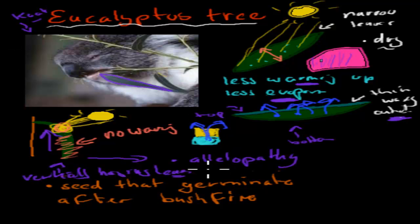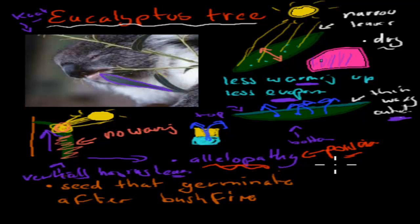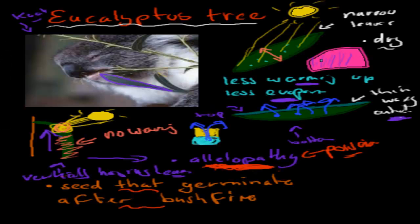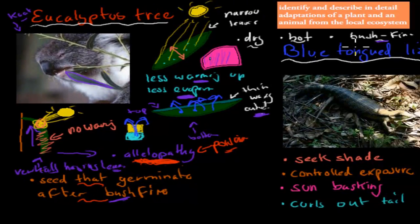Another adaptation is allelopathy — a poison that some eucalyptus trees produce that kills off competition around them. This is an advantage and a physiological adaptation: by killing off nearby plants, it gains more space and more water. It also has seeds that germinate after bushfire. This picture shows eucalyptus trees 15 months after a bushfire — they're already growing again because their seeds are specialized and actually need a bushfire to germinate. This is beneficial in Australia because there are lots of bushfires.